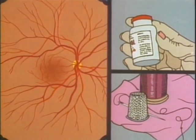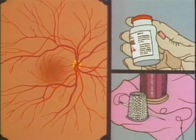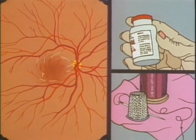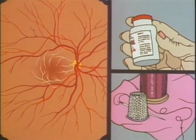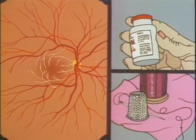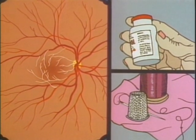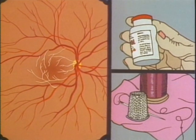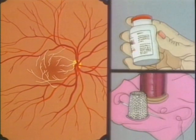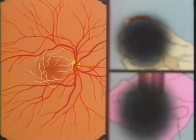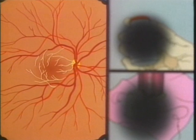If the blood vessels which nourish the macula become aged or diseased, you can lose much of your ability to read fine print and see small objects. In time, vision can become blurry, leading to loss of central vision if untreated.